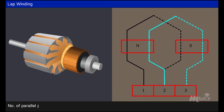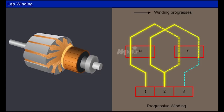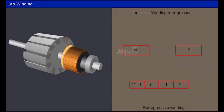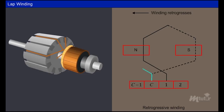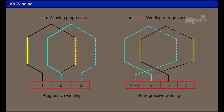The number of parallel paths A of lap winding is equal to the number of poles P. The illustrated armature winding is called progressive winding, as the winding progresses in the direction of the coil wound. The other way of winding is called retrogressive winding, in which the winding progresses in the direction opposite to that of the coil winding direction.